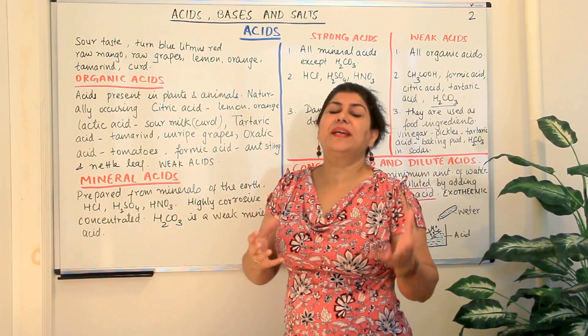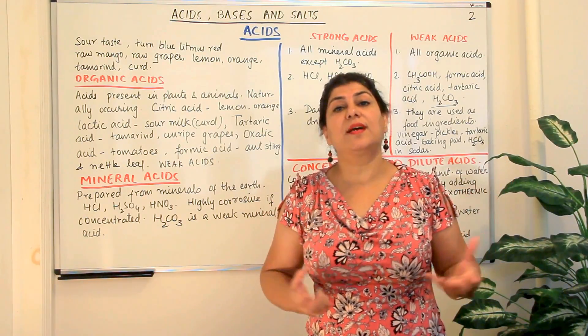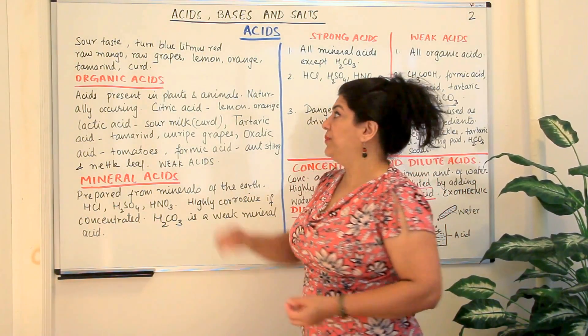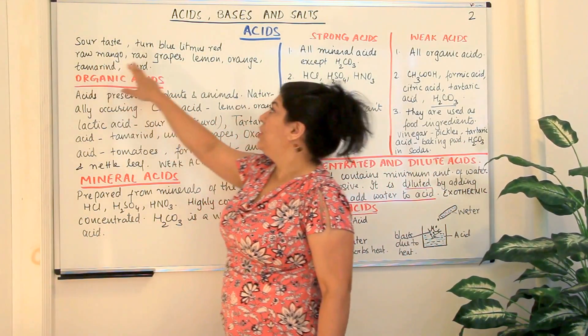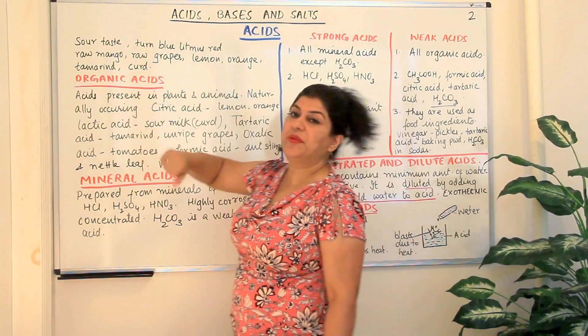Then where do we find acids if they are sour in taste? Anything that is sour, the foods that we eat that are sour, they would be acidic in nature. For example raw mangoes, you have raw grapes, lemon, orange, lime, tamarind, curd.